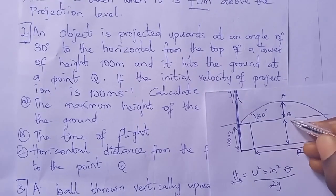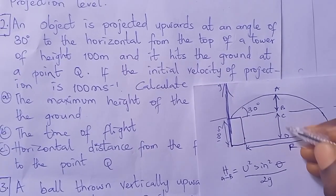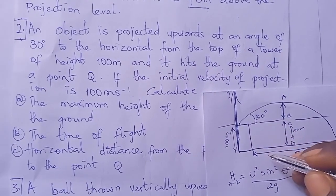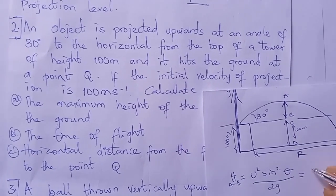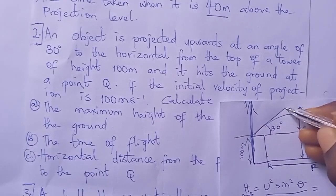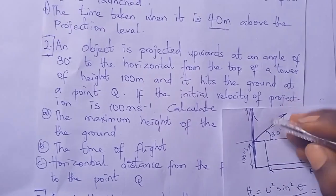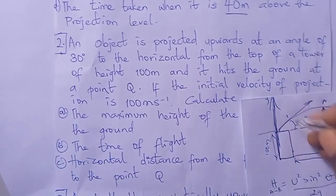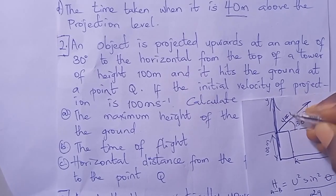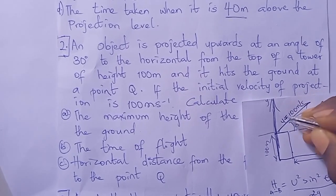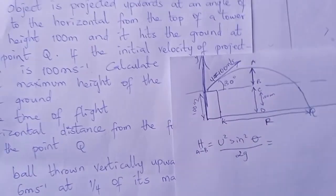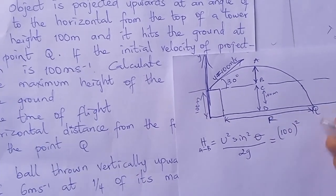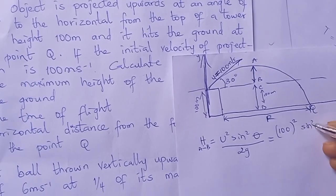Let's say the launch point is A and the peak is B. The height from A to B is what we want first. The height of the tower — from C to D — is already given as 100 meters. The initial velocity of the projection is U = 100 m/s. So we have 100² × sin²θ.